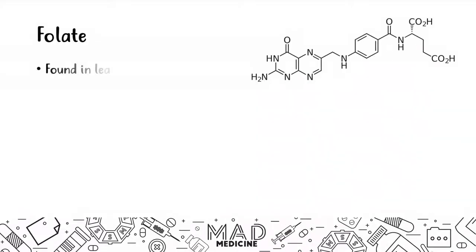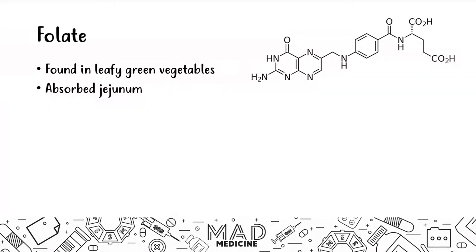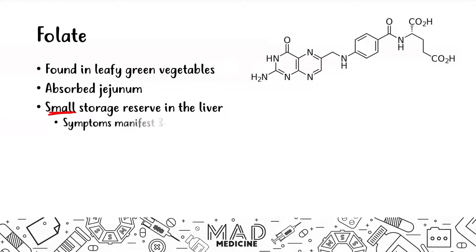This is the chemical structure of folate. It is found in green leafy vegetables and is absorbed in the jejunum. When it comes to the liver, there is a small storage reserve — it's very important to understand that the storage amount is small.